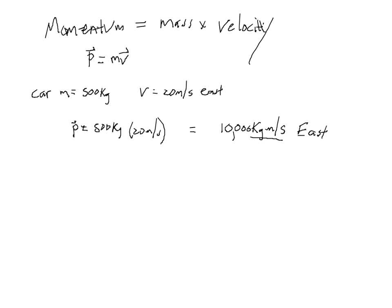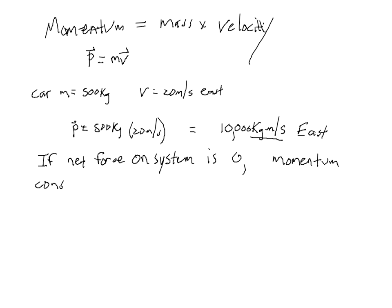The reason that momentum is most useful to us is because there are some circumstances under which momentum is conserved. That circumstance turns out to be if the net force on an object or a system is equal to zero. So if the net force on a system is zero, then the momentum of that system is conserved.